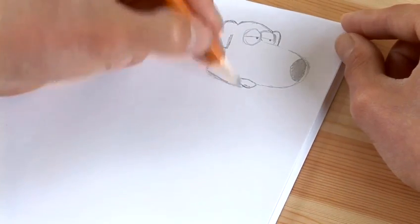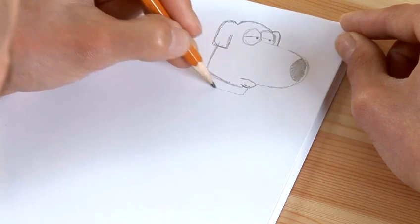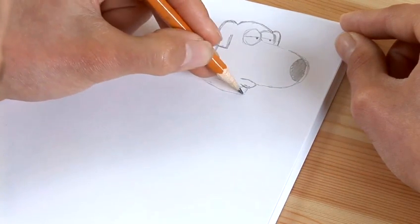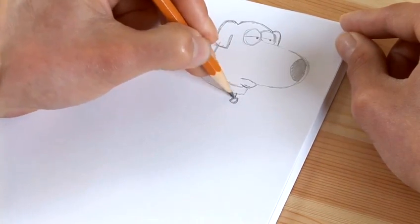From there we should do his collar. So you've already got the top of the collar here. So you just follow around another line in the same sort of place. And there's his collar. A little dash there. A circle for the tag.